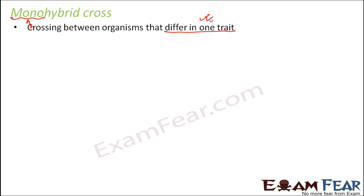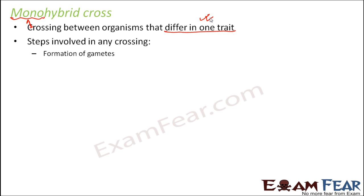Any type of cross is essentially sexual reproduction — fertilization between the male and female gamete. The steps involved in any crossing are: first, formation of gametes, where both parents produce their own gametes — one male gamete and one female gamete. Then, formation of the zygote when the gametes fuse together. These basic steps apply whether we're talking about a mono hybrid cross or a di hybrid cross.